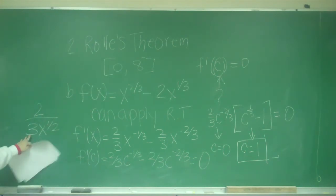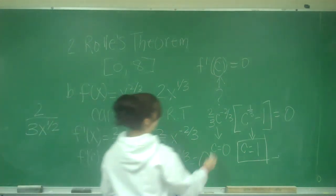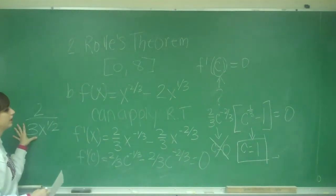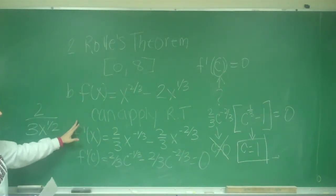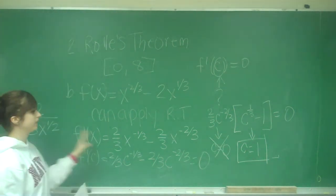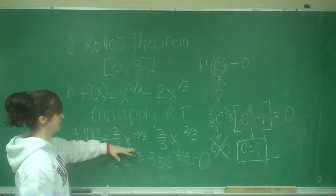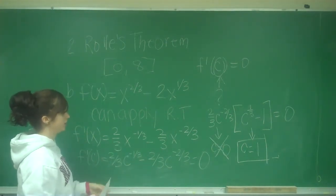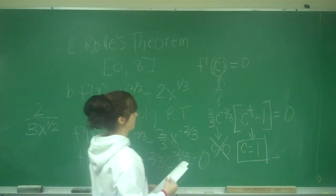And because I can't divide by 0, it doesn't work. But even though the derivative is not continuous, the original function is continuous. So I can still use Rolle's theorem, but I just can't include 0 in my answer because this function is undefined at c equals 0. So my answer is just c equals 1.